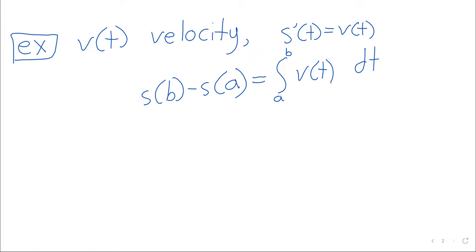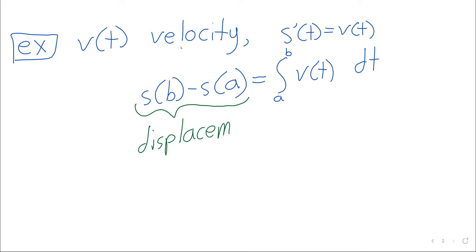And this equality doesn't have any requirements as far as velocity being positive. This equality is just the net change theorem — it's always true. And what is the net change? S(B) minus S(A) — it is the displacement of the object.